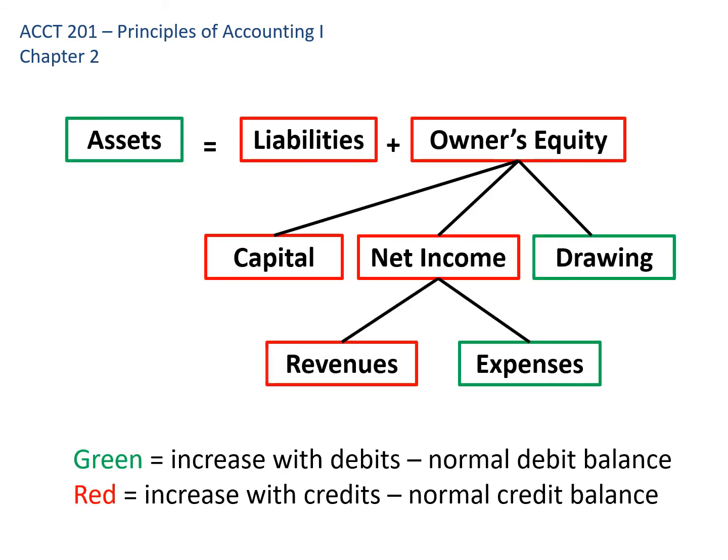Another way to look at it is the accounting tree. The accounting tree starts with the foundational formula: assets equal liabilities plus owner's equity. The left side of the equation increases with debits; the right side increases with credits. Owner's equity increases with credits for capital going in. Net income is a credit and drawing is a debit — it pulls equity down. Revenues are credits and expenses are debits.